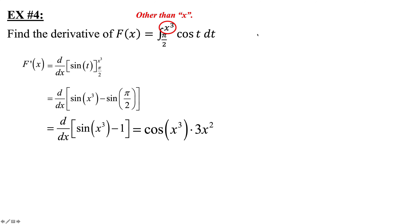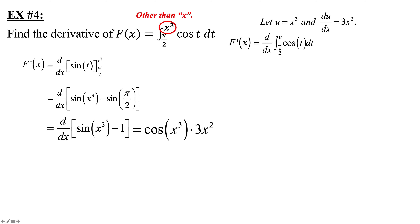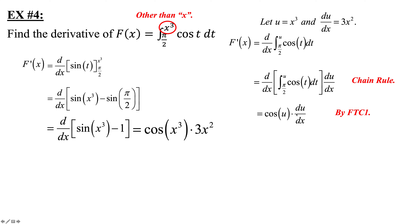The derivative of sine is cosine of x cubed, but then we've got to take the derivative of the inside and multiply by 3x squared. We need to slow down when our upper bound is something other than x to the first power, because now we need to apply the chain rule. Another approach is u-substitution: let u equal x to the third power, then du equals 3x squared dx. Now integrate from pi over 2 to u of cosine t — by FTC that's just cosine of u — then multiply by du over dx, giving cosine of x cubed times 3x squared. Either technique works.